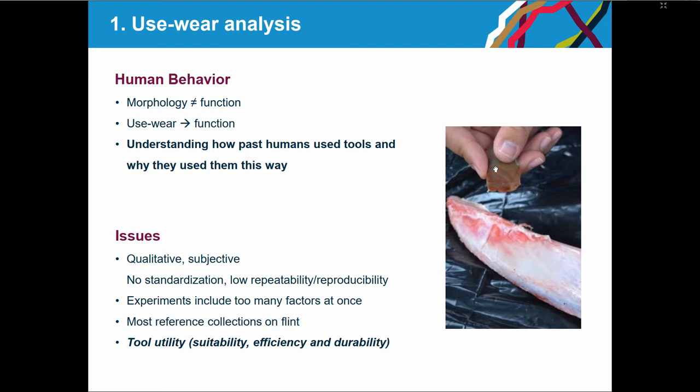When you're testing many variables at the same time, it's tricky to understand how they affect the final results. There is also the issue related to raw materials. Most reference collections used to interpret the archaeological record rely on flint, which is a limitation when we try to analyze raw materials such as quartzite, obsidian, or basalt, which behave significantly differently.